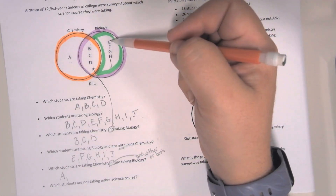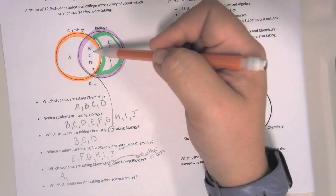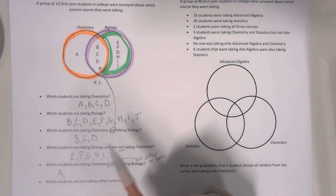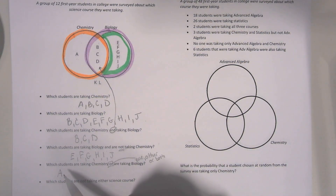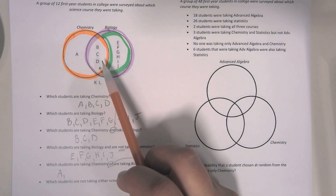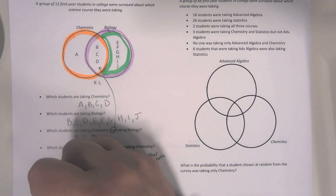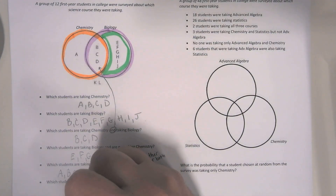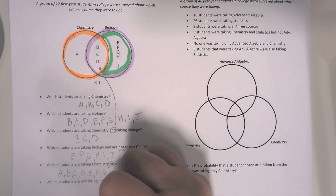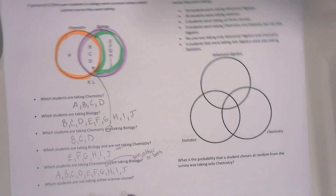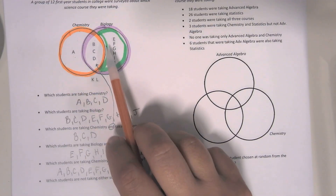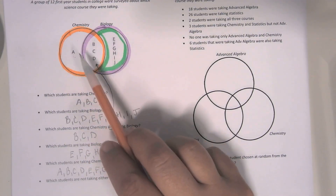People that are taking just biology are E, F, G, H, I, J. We also want to include the people that are taking both. So we have student A, we have both — which is B, C, and D — and then we also have the students taking just biology, which is E through J. So when you see OR, you're looking at just taking chemistry, just taking biology, or taking both at the same time — so everybody in all of the circles.